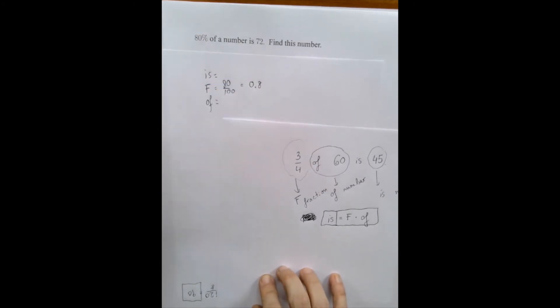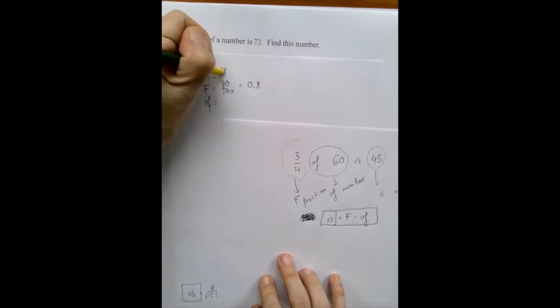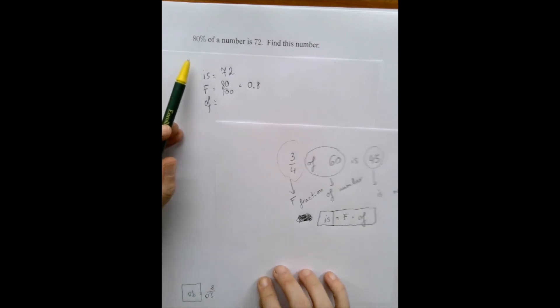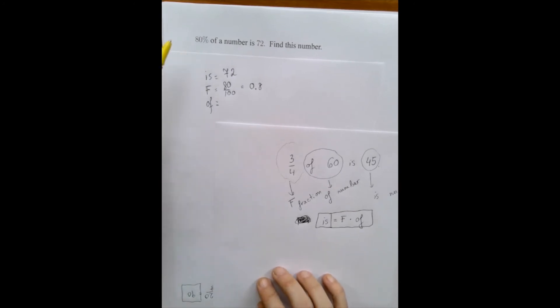Now is and 72 are very, very close to each other. And that seems to be the right idea because of a number, find this number. So the of number is the one that is withheld and asked.